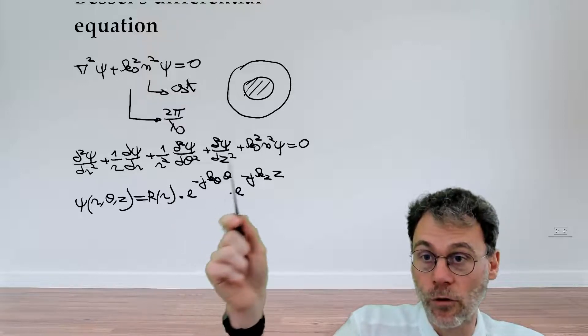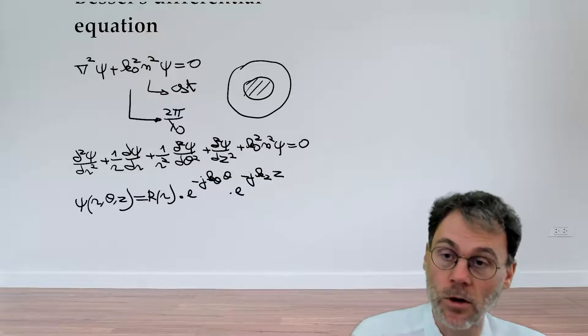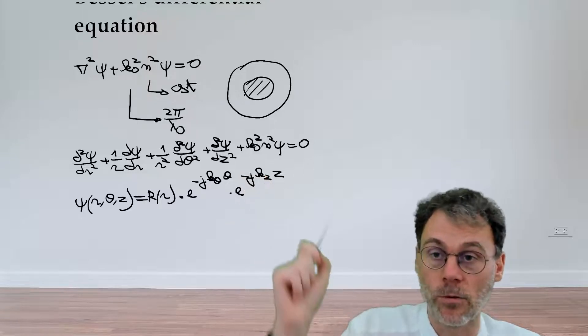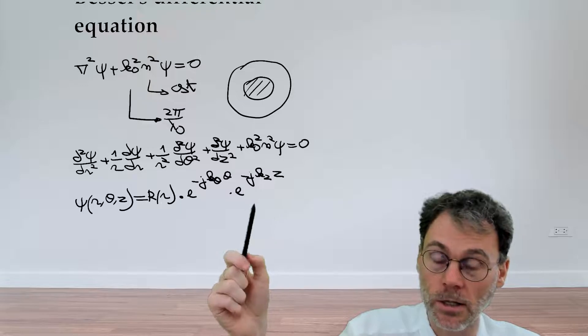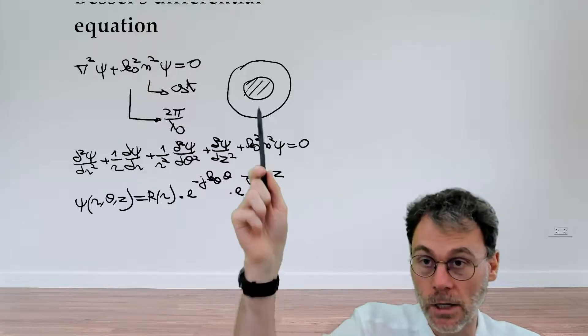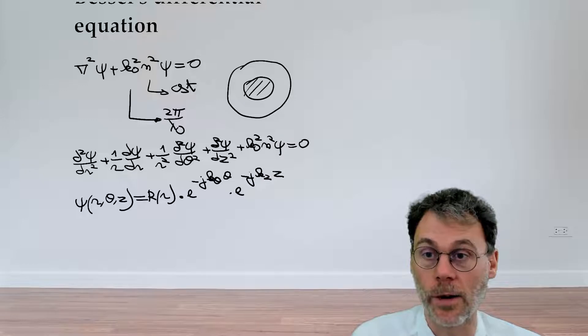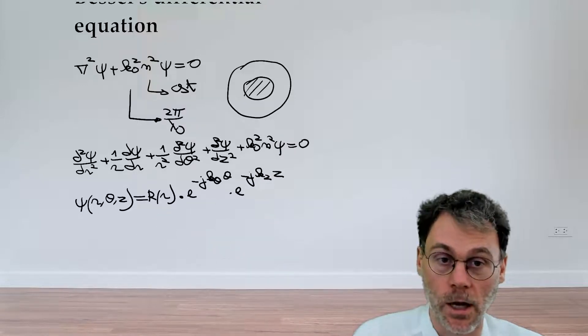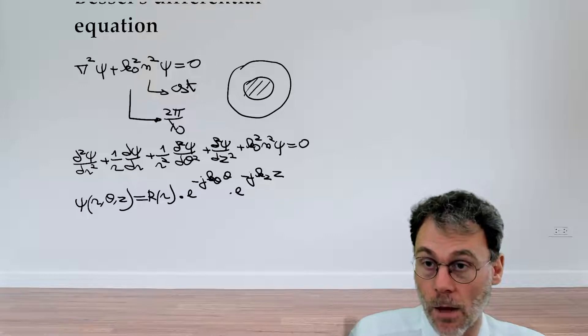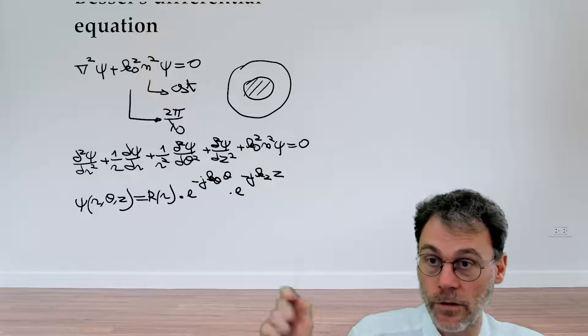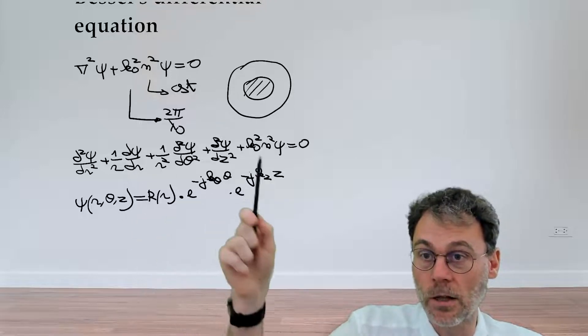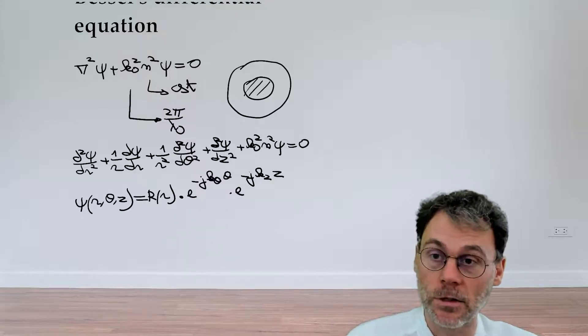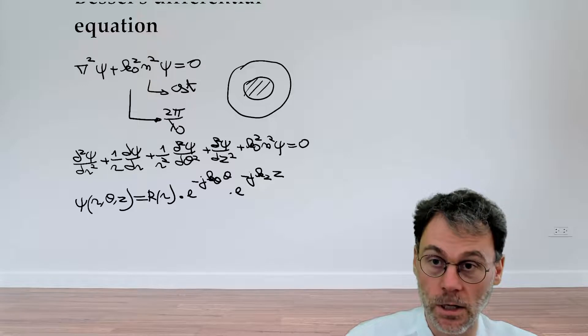So where does this form come from? That basically comes from the physical interpretation behind this problem. But we're not going to discuss that here. We're going to postpone that until we actually calculate the eigenmodes of an optical fiber. Let's just assume for now that this thing falls out of the sky. But let's see if it works. Pause the video. Substitute this particular form into that equation and then see what happens.